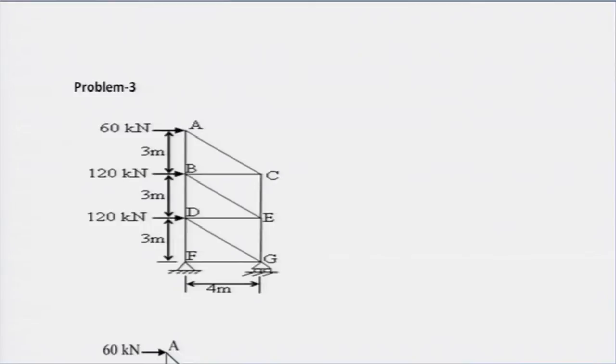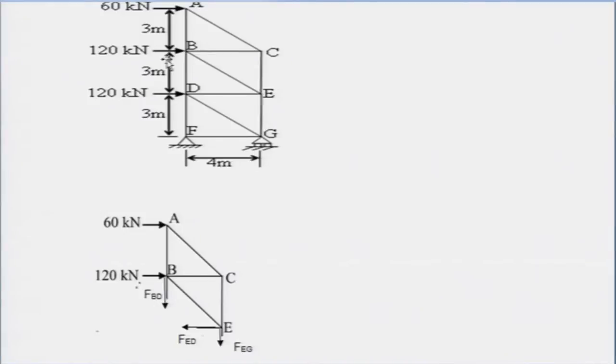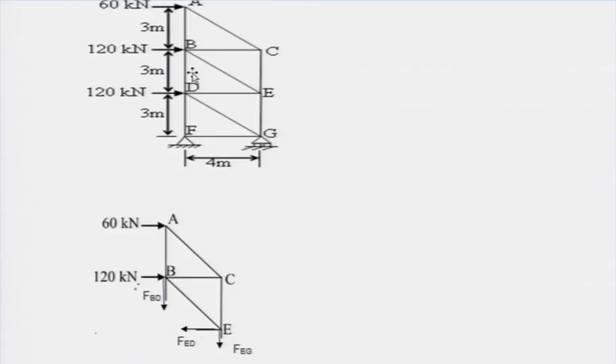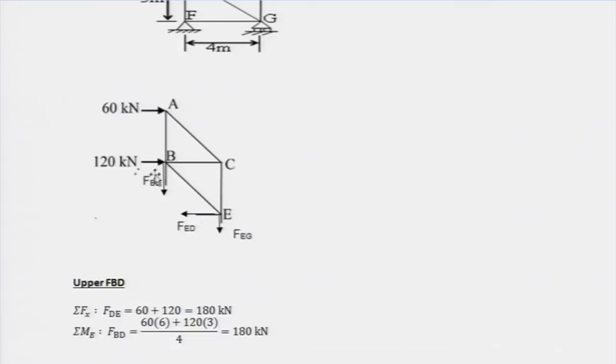Take the equilibrium of the upper half of the body. So let us try to look at the solution here. Solution is displayed here in your video. Try to take a section through BD, DE, and EG. That will expose these forces. BD, DE, and EG will be exposed and you can take the upper half of it. That means A, B, E, C, that portion we have taken out.